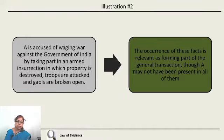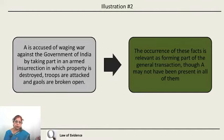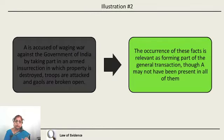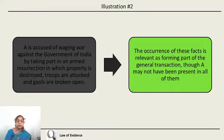In another illustration, suppose A is accused of waging war against the government of India by taking part in an armed insurrection. In different places, property is destroyed, troops are attacked, jails are broken open. Though these incidents seem different, they have a connected thread. All occurrences are relevant because they form part of the same general transaction, even if A was not personally present at all these events.